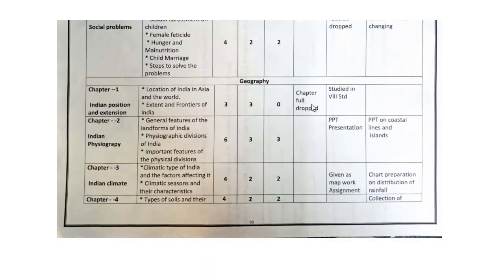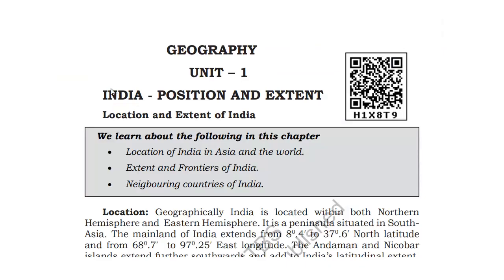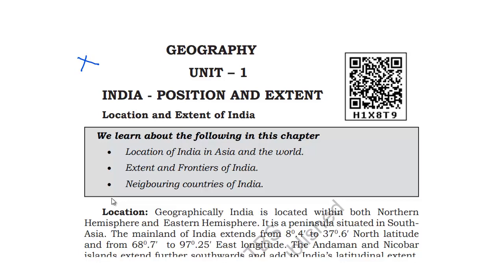Coming to Geography: Chapter 1, 'Indian Position and Extension,' has been completely dropped — you don't have to study this chapter at all. The reason it was dropped is that you already studied this chapter in Grade 8. Let us mark it in the textbook as deleted. You don't have to study this anymore.